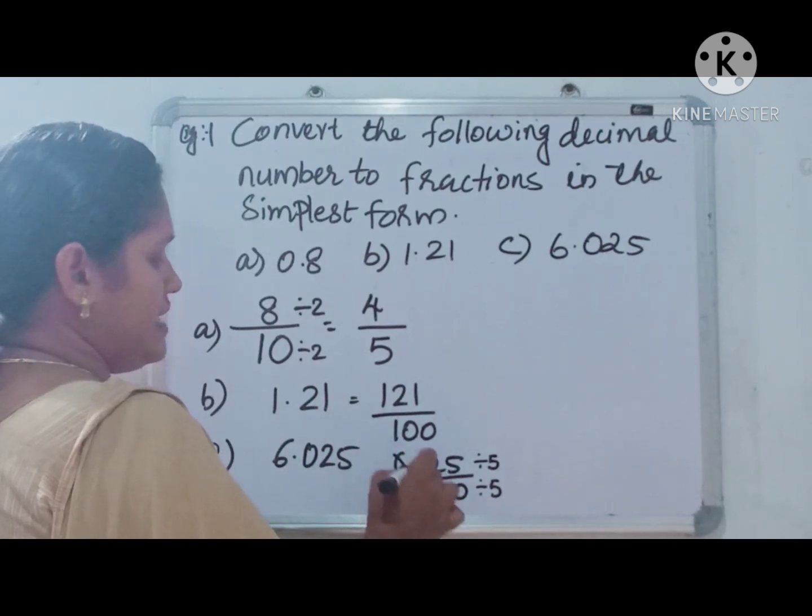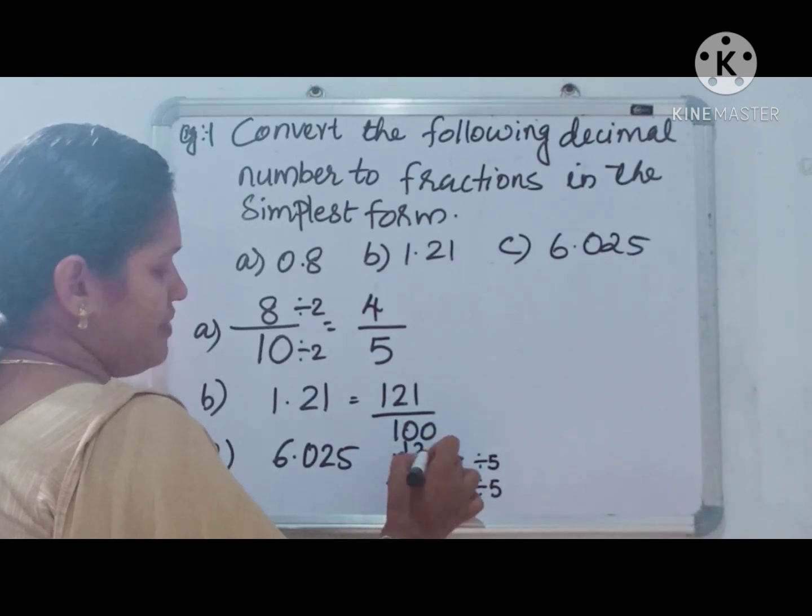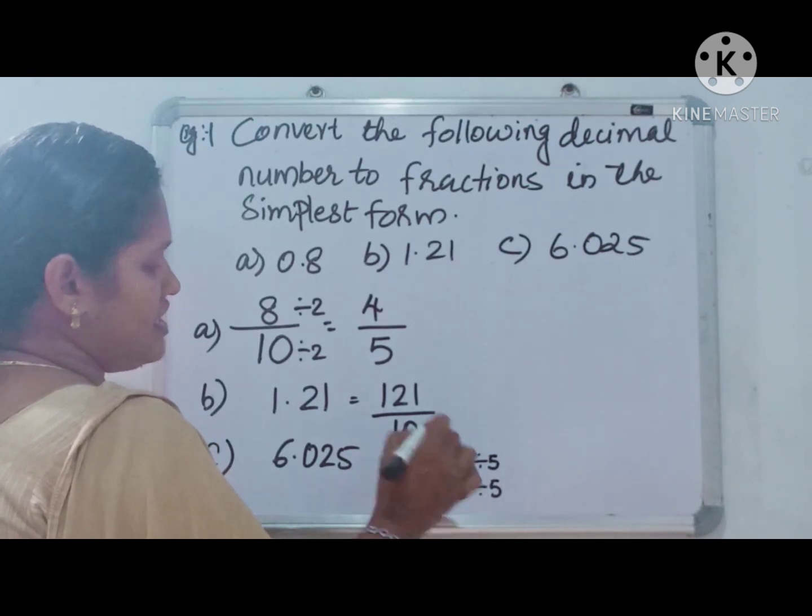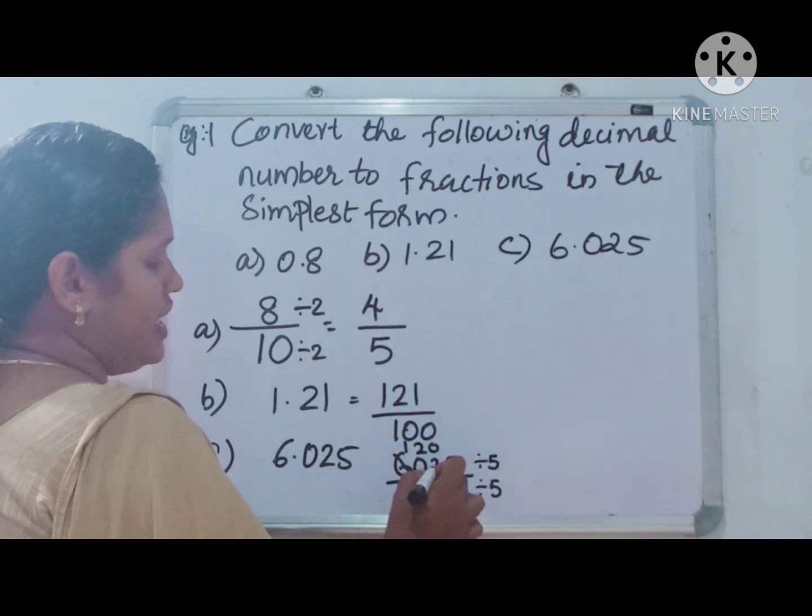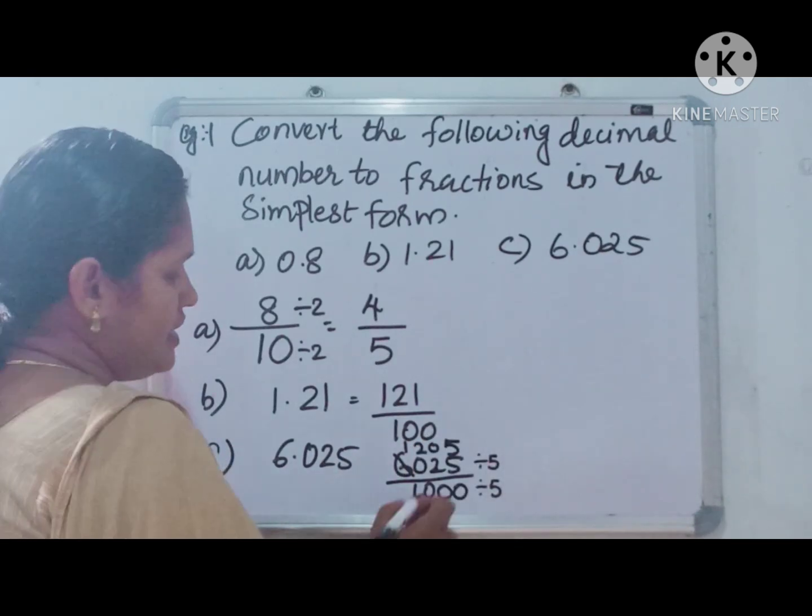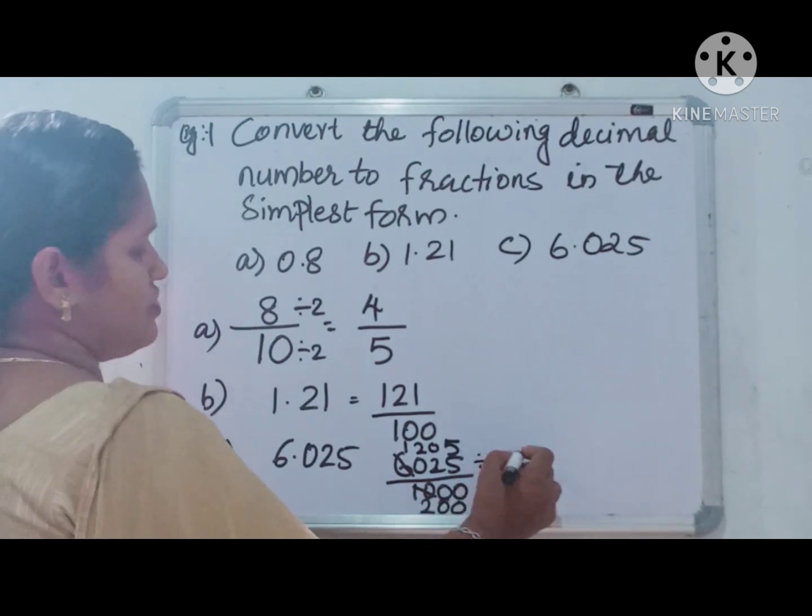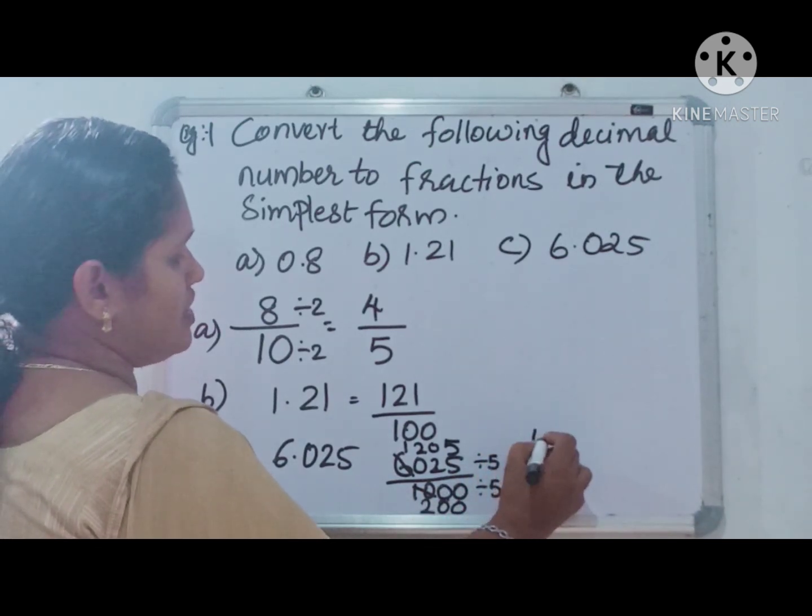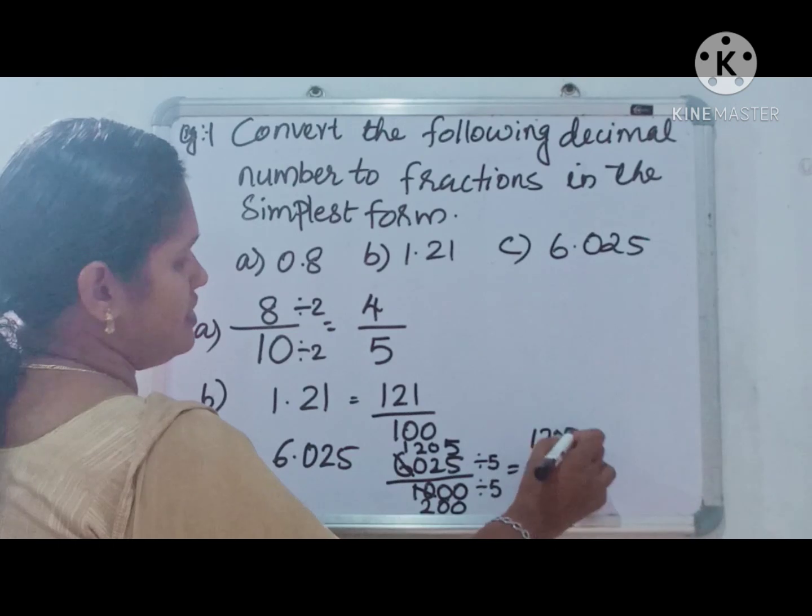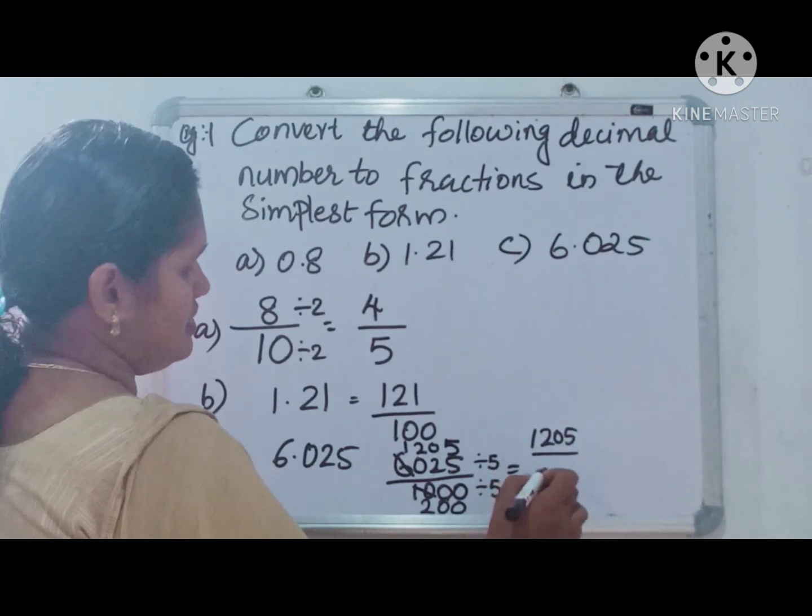Here, in 6, 1 five. In 10, 2 fives. In 2, there is no 5, so write here 0. In 25, 5 fives are 25. In 10, 2 fives are 10. In 0, 0 times. So 1205 by 200.